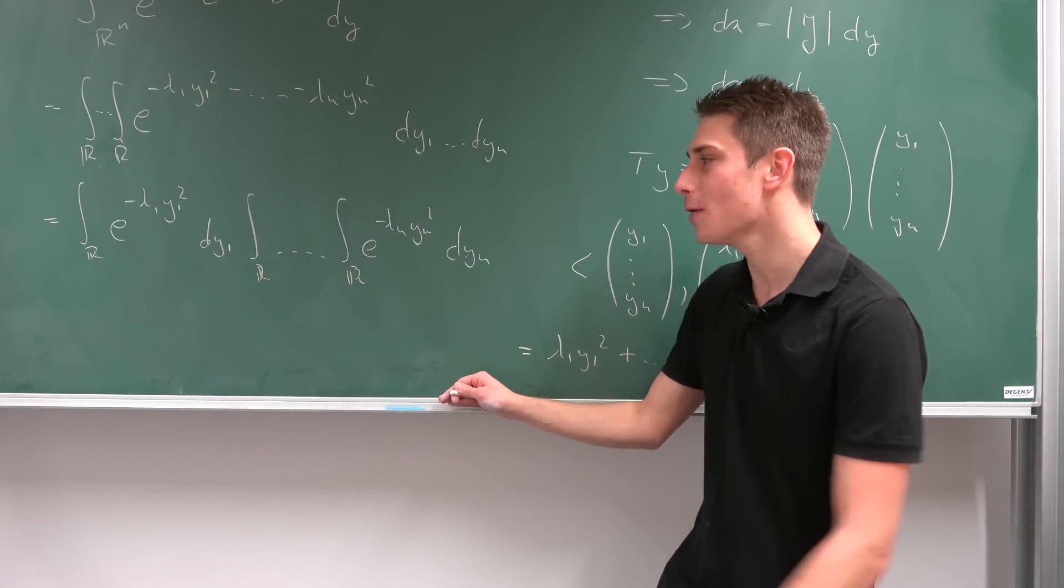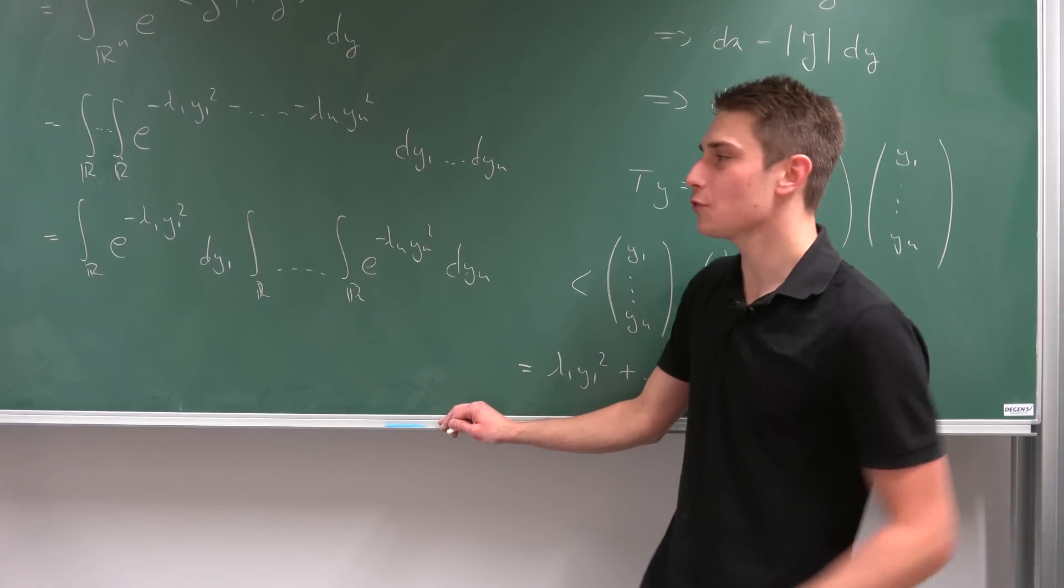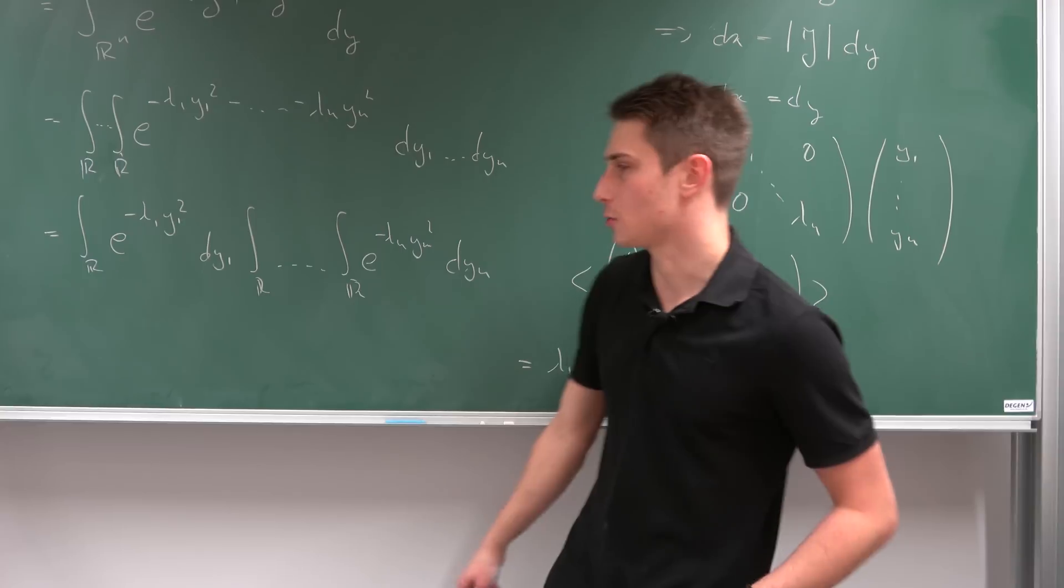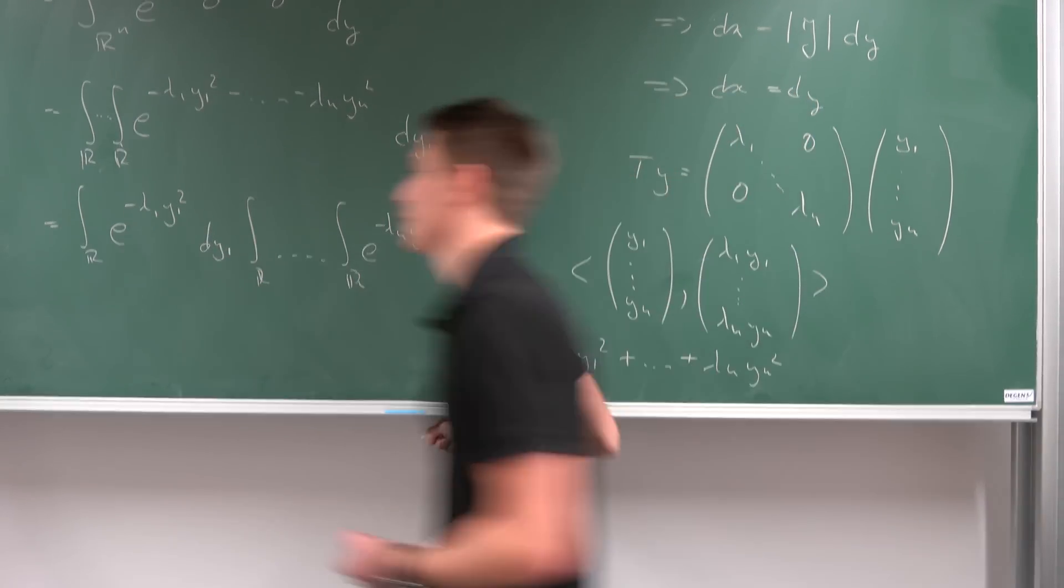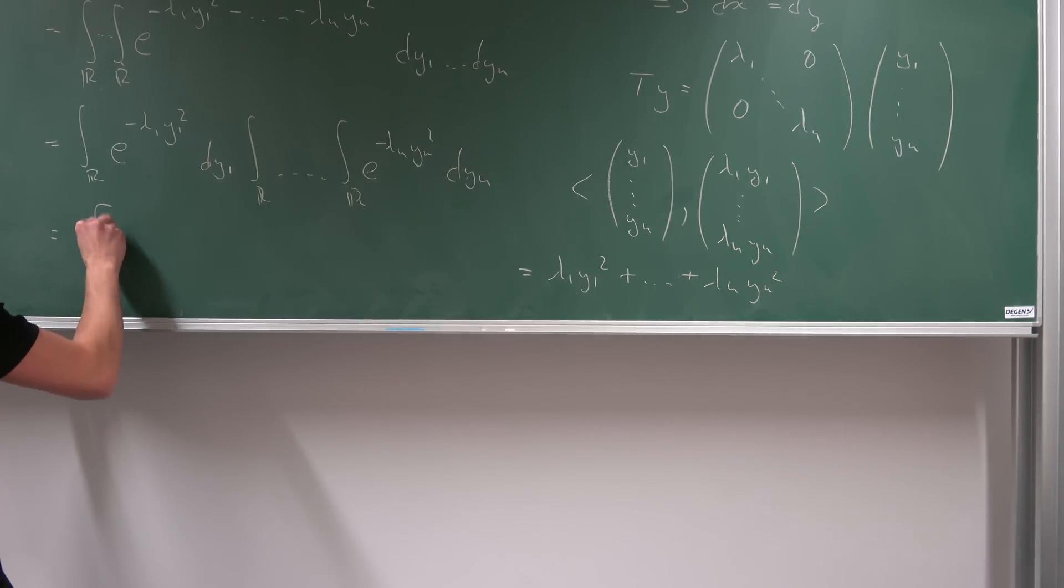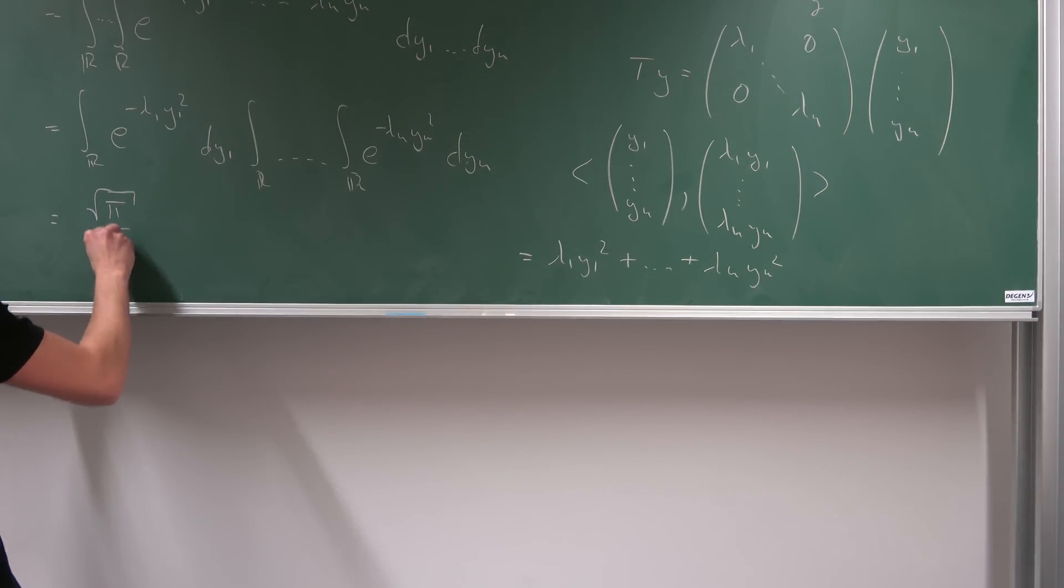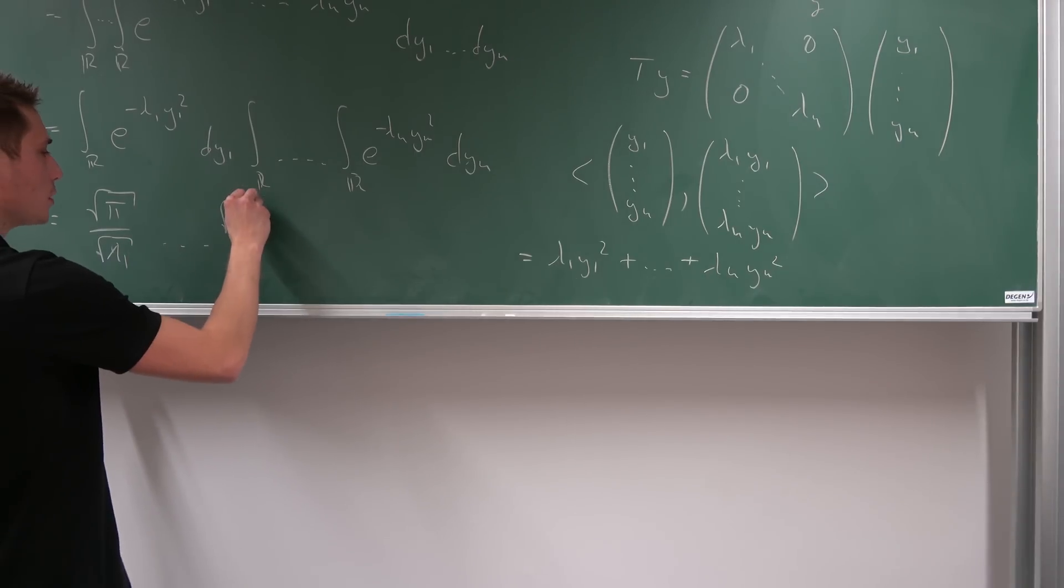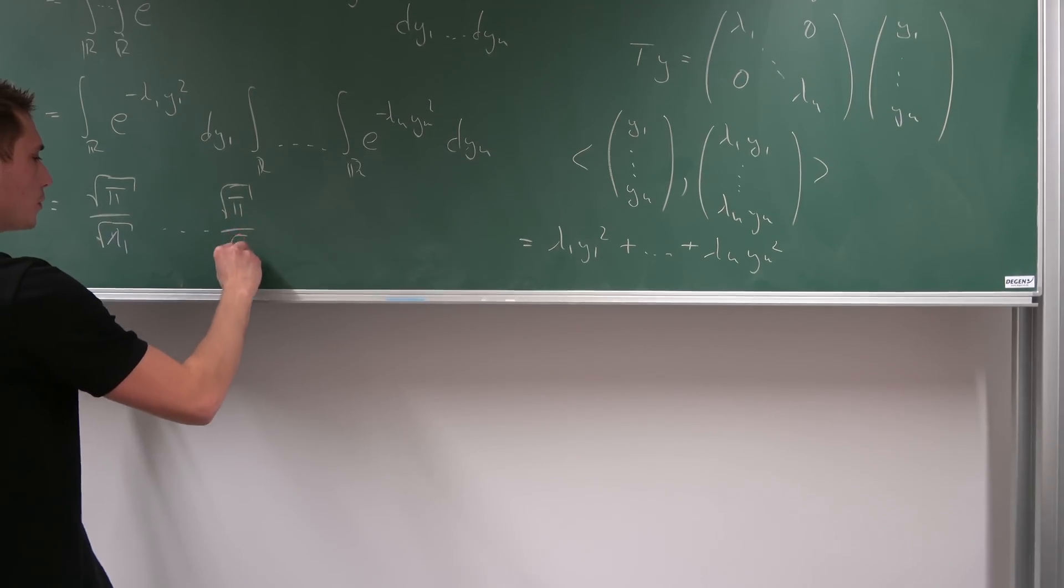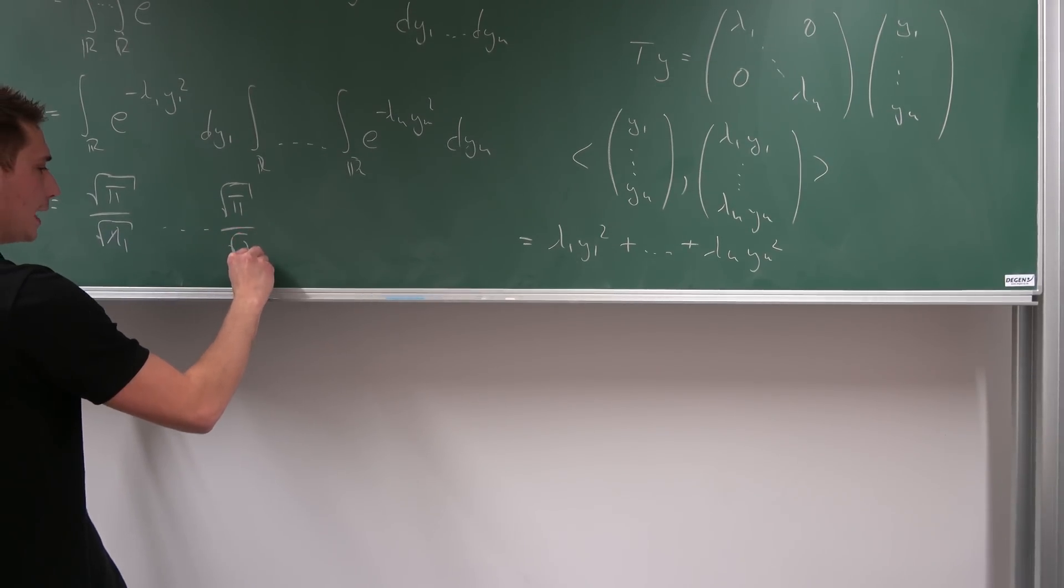This is a lot of input, I know. But the cool thing is, we can now actually calculate those, because, well, those are just all Gaussian integrals. So the first one is going to evaluate to square root of pi over square root of lambda 1. This is going to go on until square root of pi over square root of lambda n, in this case.